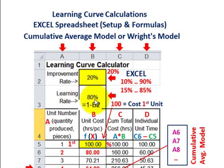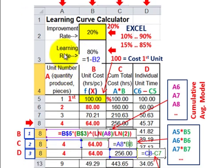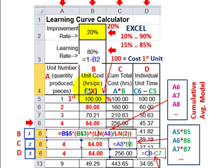For column A, you're going to put your unit number or quantity produced, starting from row five. Row four has descriptions. For row five onward, unit numbers are just single digits — 1, 2, 3, 4, 5, down to 20 or however many you need. For column B, that's going to be your unit cost or hours per piece — the learning curve function. You start by entering the cost of the first unit; using 100 is a good reference point as it makes the output easy to understand as a percentage decrease along the learning curve.